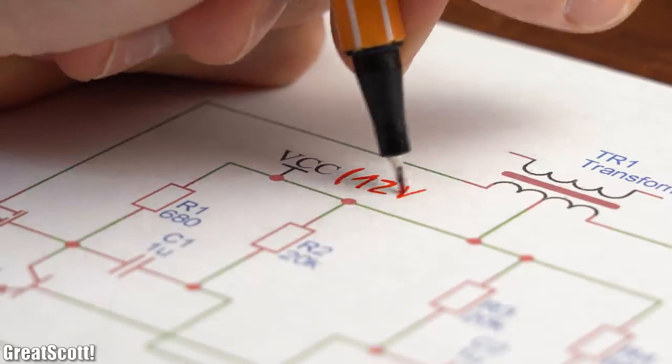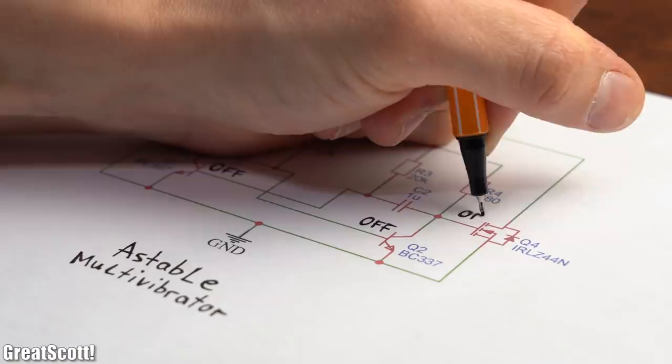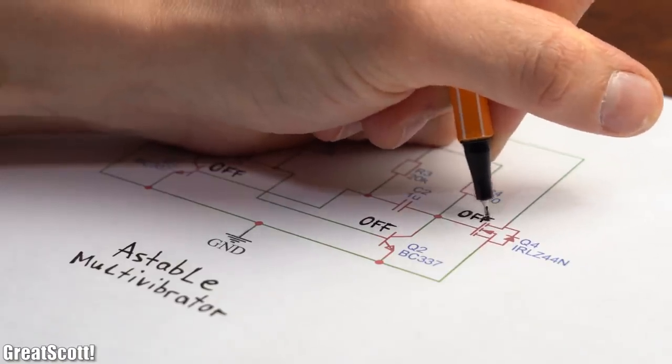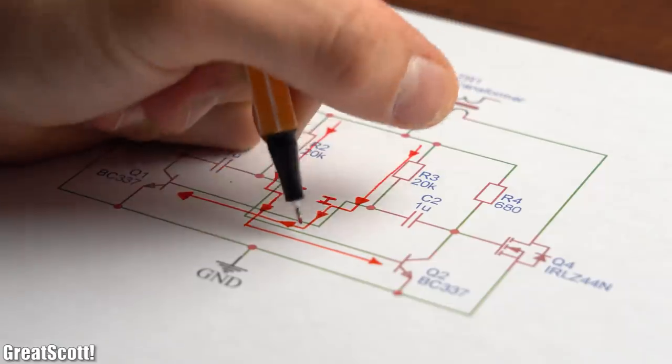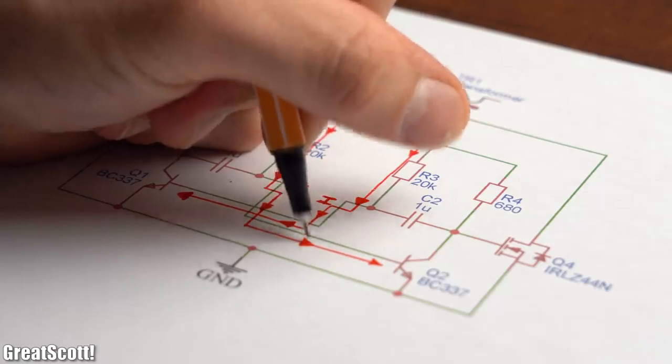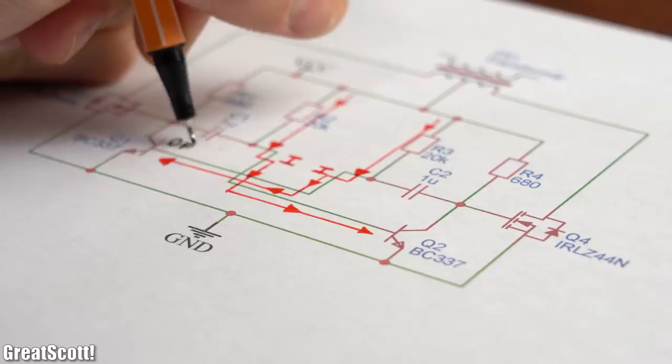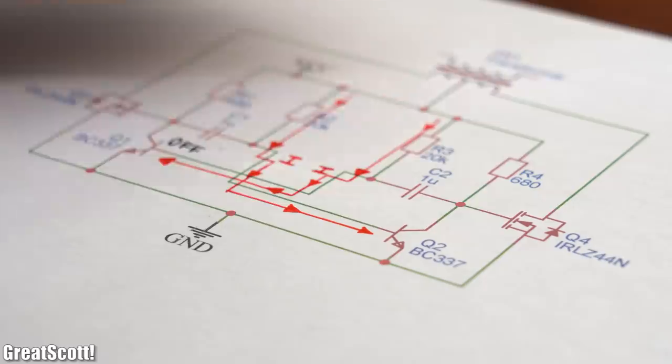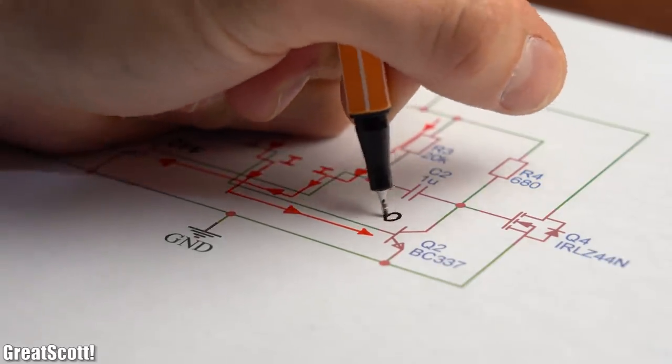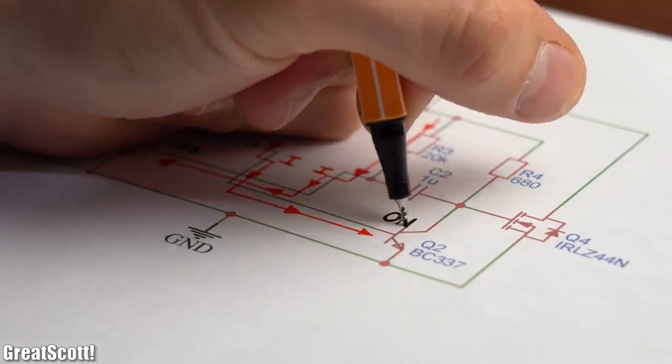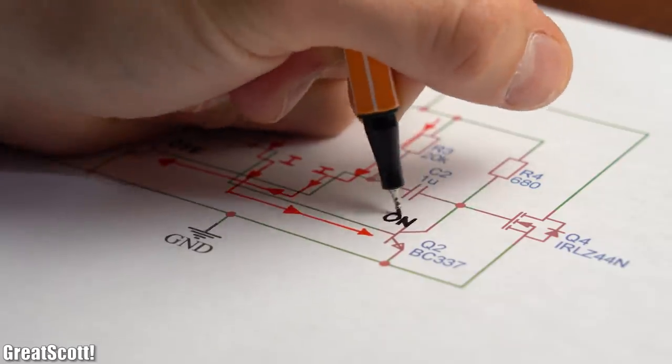When 12V is first applied to the circuit, both BJTs and MOSFETs are turned off. But current can flow through each base of the BJTs. But since every transistor is a bit different, one of them will conduct first and thus turn on, which in my case is the right one.